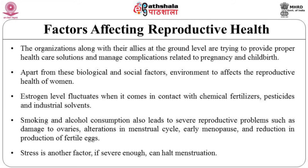Smoking and alcohol consumption also lead to severe reproductive problems such as damage to ovaries, alterations in menstrual cycle, early menopause and reduction in production of fertilized eggs. Stress is another factor which, if severe enough, can halt menstruation.